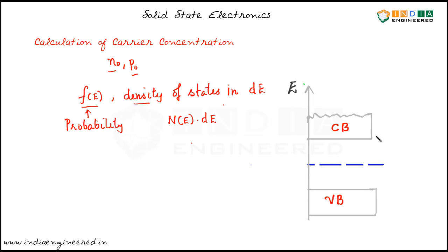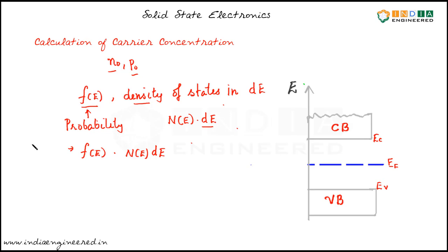Now we have our energy band diagram. Let's mark our conduction band range and valence band along with our Fermi level. The number of electrons per unit volume in the energy range dE is the product of the probability F(E) and the density of states N(E)·dE. So this product gives us the number of electrons per unit volume in the energy range dE.